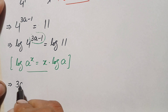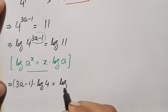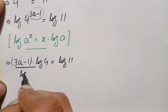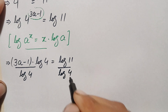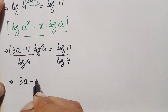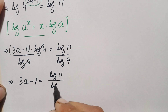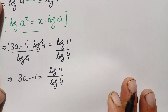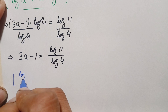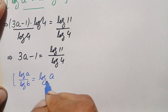The equation becomes (3a − 1) times log(4) equals log(11). Dividing both sides by log(4), the log(4) terms cancel on the left, giving 3a − 1 equals log(11) divided by log(4). Using the change-of-base logarithm identity, log(a)/log(b) equals log base b of a.